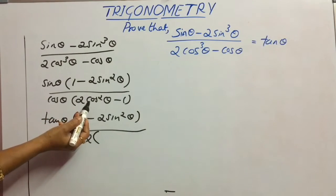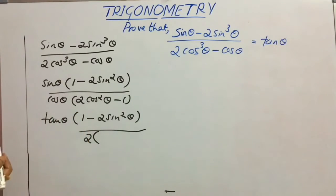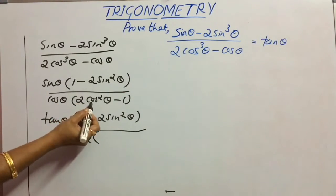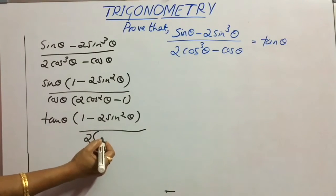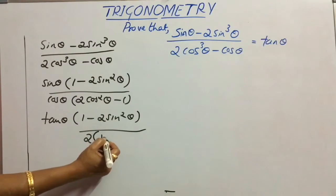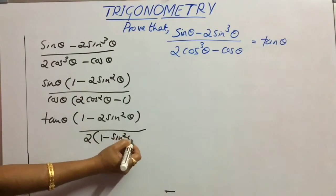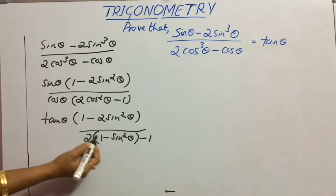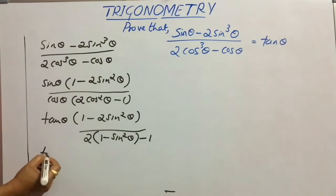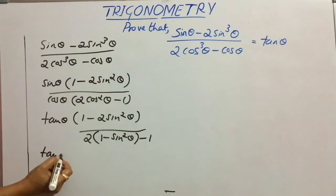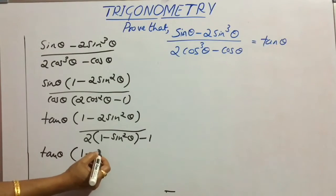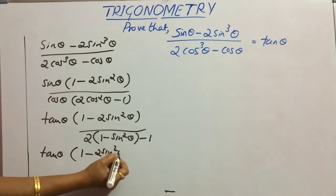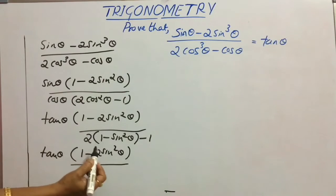We know that sin²θ + cos²θ = 1. So if we want to replace cos²θ in terms of sin²θ, that will be 1 - sin²θ. Substituting gives tan θ into (1 - 2sin²θ) divided by the expanded denominator.